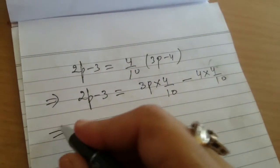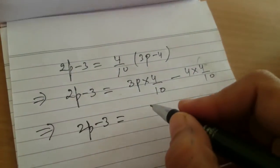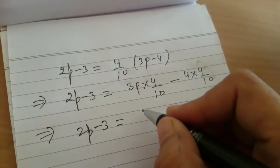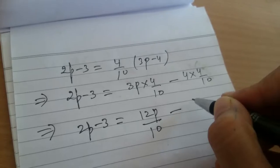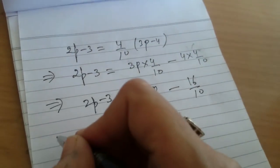This implies, and we will copy this here. Then we will multiply 4 multiplied by 3, that is 12, 12p upon 10 minus 4, 4, 16 upon 10. Then this implies.